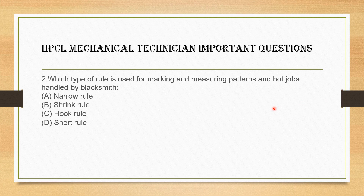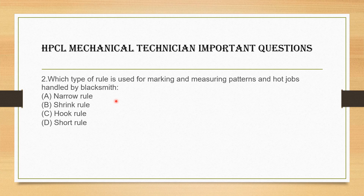Next question: which type of rule is used for marking and measuring patterns and hard jobs handled by a blacksmith? Options are: A. Narrow, B. Shrink, C. Hook, D. Short. The answer is option B — shrink rule. The shrink rule is used in many exams as well.